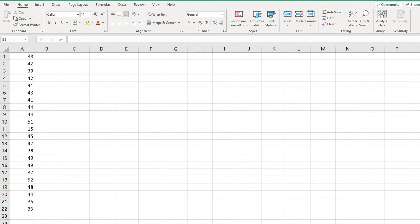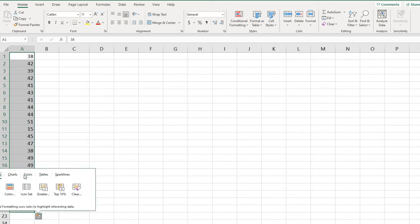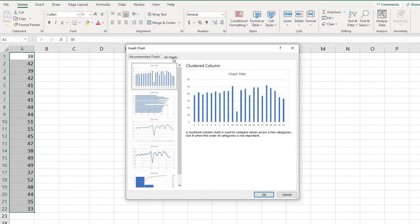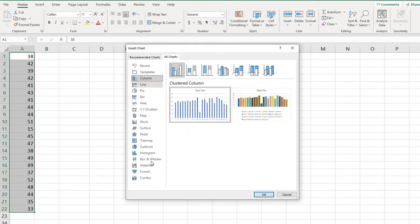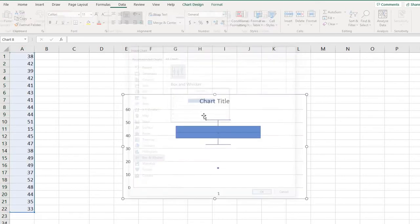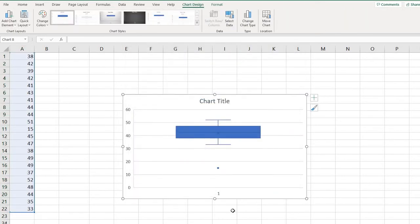In order to create the box and whisker plot, you must first select the data that you want to work with. I'm going to go ahead and select all of those data points. Some of you will be able to just nicely click on this quick analysis tool and go to charts and more charts and then go to all charts. You will be able to find the box and whisker plot, click OK, and it will automatically create a box and whisker plot for you.